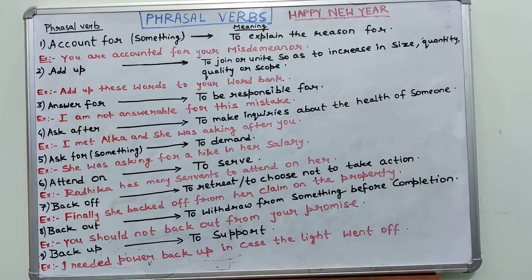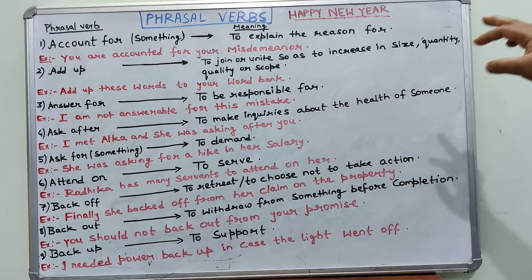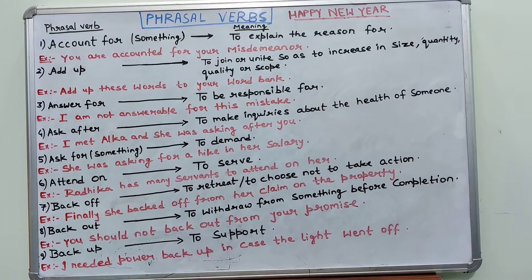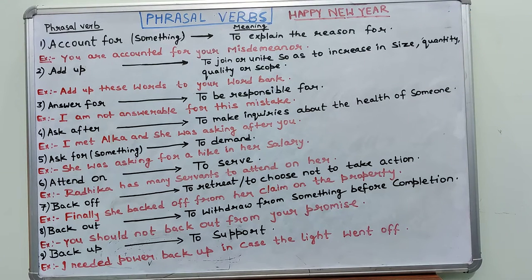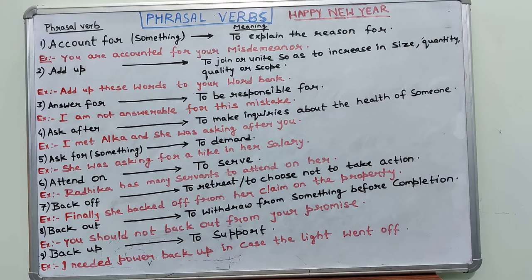The first phrasal verb is 'account for something.' The meaning is to explain the reason for something. Example: You are accountable for your misdemeanor. The second one is 'add up,' meaning to join or unite so as to increase in size.